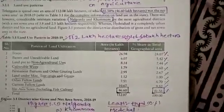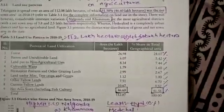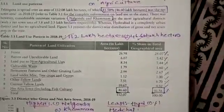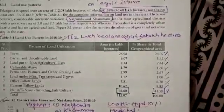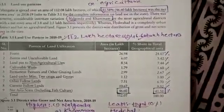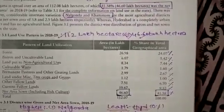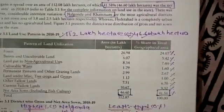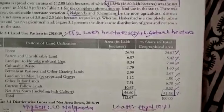The total area of Telangana is 1.12 lakh hectares — that is the total geographical area of Telangana. This encloses 26 lakh hectares such as the forest, and 6 lakh hectares such as barren and uncultivable lands.